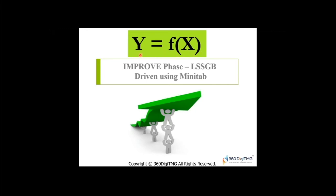In the Define Phase of the Lean Six Sigma Greenbelt, we identified what y is — how to identify the output. In the Measure Phase, we measured the current performance of y. Then in the Analyze Phase, we generated many inputs that ideally impact the output, and from all those potential inputs, we shortlisted a few vital inputs using hypothesis testing.